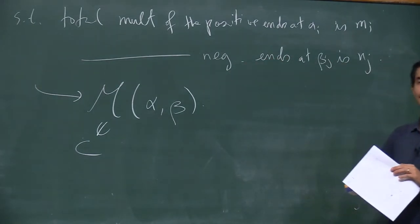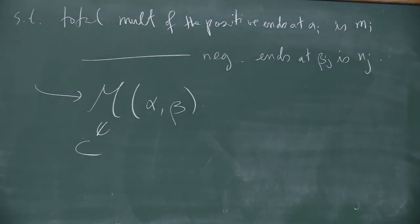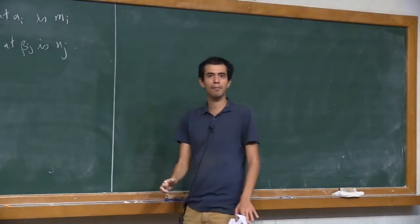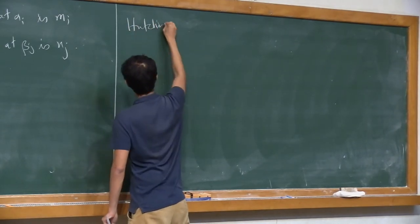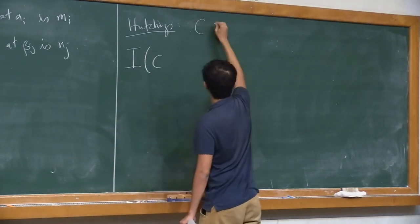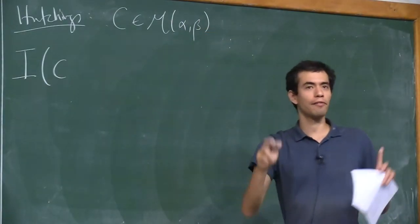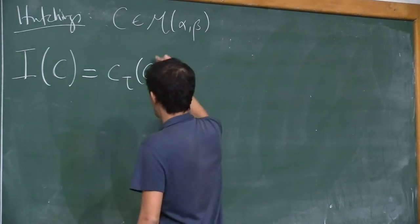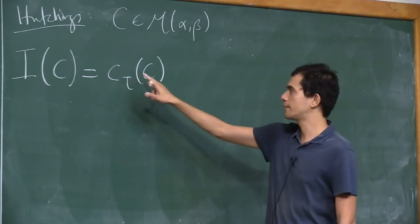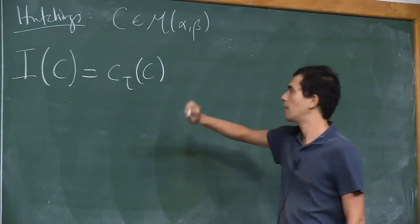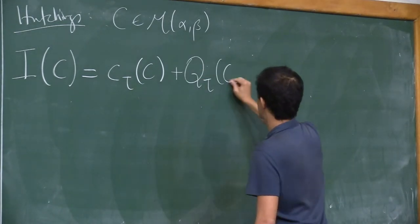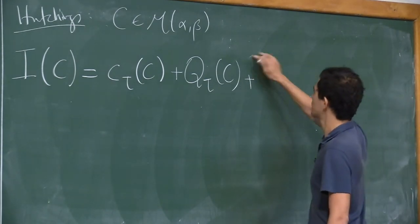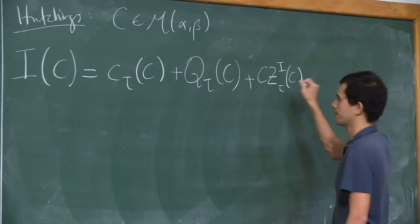Now I can define probably the most important thing: the ECH index. This is the first main big idea. Hutchings defined the following: given a C in M(α, β), a J-holomorphic current, you define I(C) to be the relative first Chern class with respect to τ, plus a self-intersection term, plus a Conley-Zehnder term. The idea came from Taubes in the 90s.